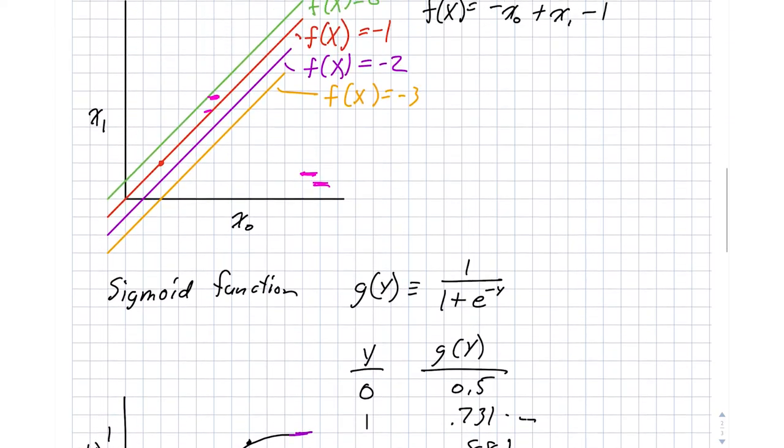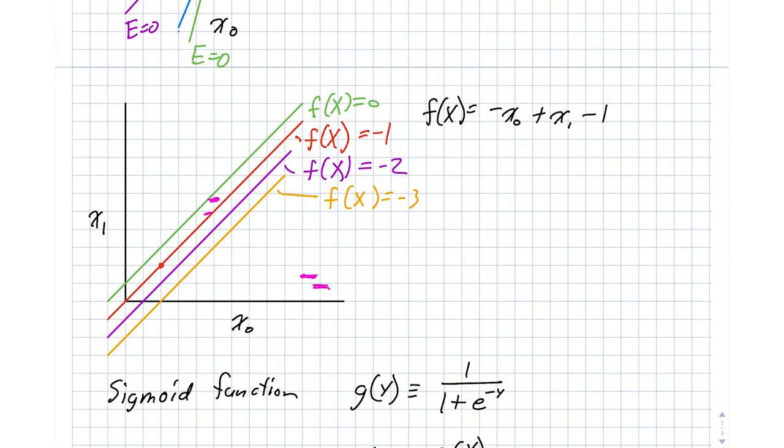But in between, we have a bit more of a fuzzy notion of whether we have a positive or negative. So let's go back up to our original picture here. When f of x equals 0, g equals 0.5. When f of x is negative 1, then g is something around 0.26. When f is negative 2, then g is 0.119.